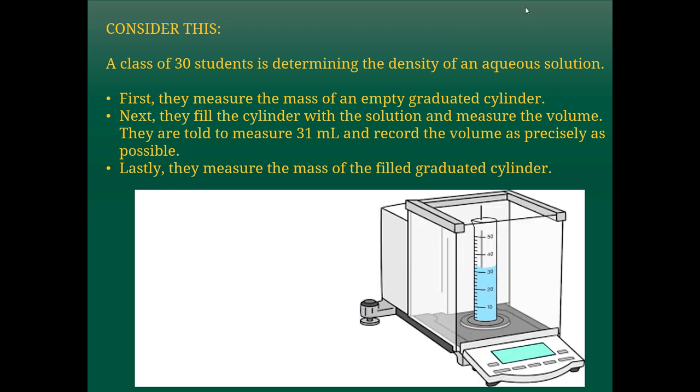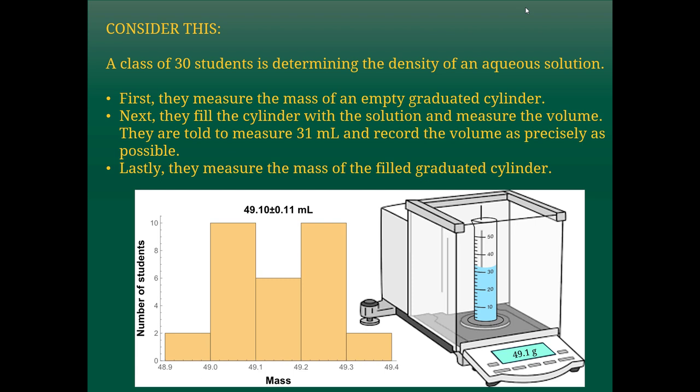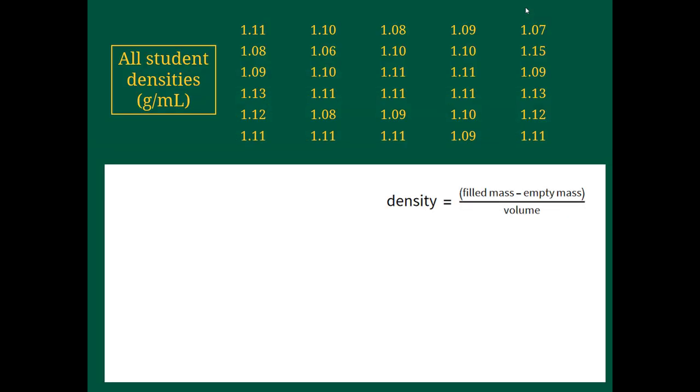Last, we're going to take this filled graduated cylinder and measure its mass one more time. We get the same type of situation where there's a variety of responses because we've got 30 students all doing slightly different experiments or slightly different measurements. There's random error in here, and we get an average of around 49.10 plus or minus 0.11 milliliters.